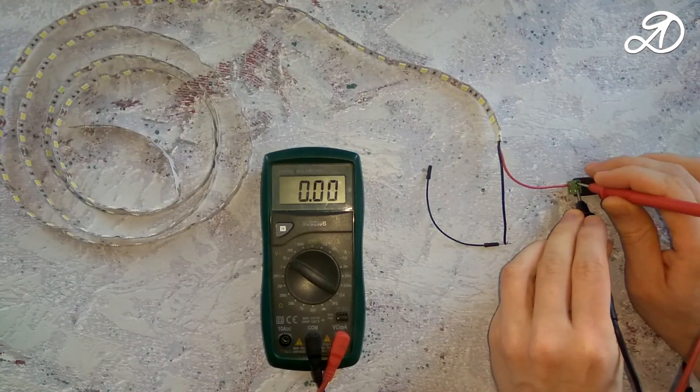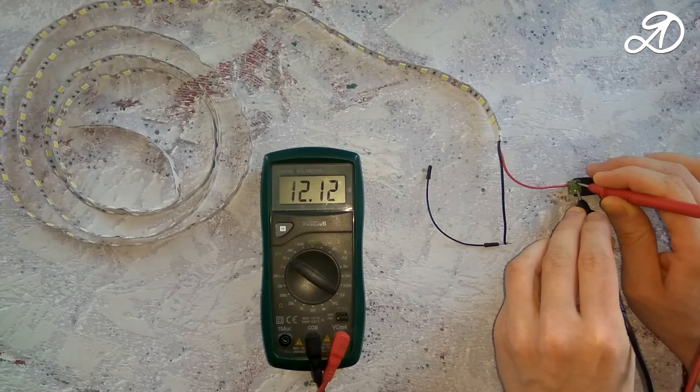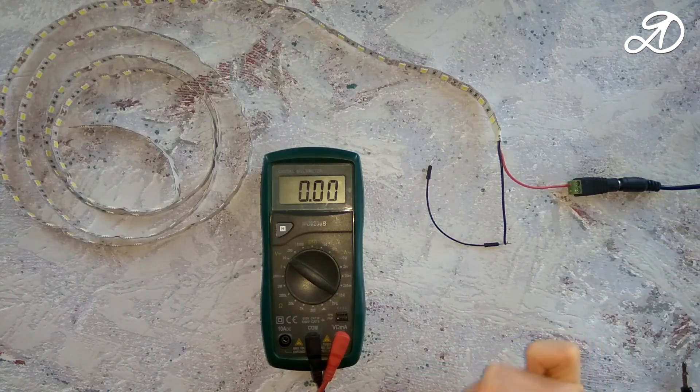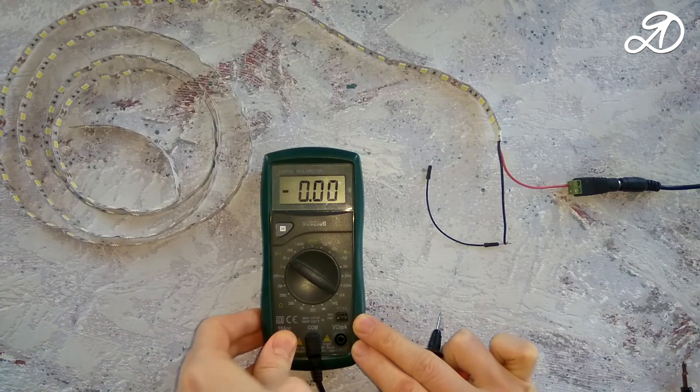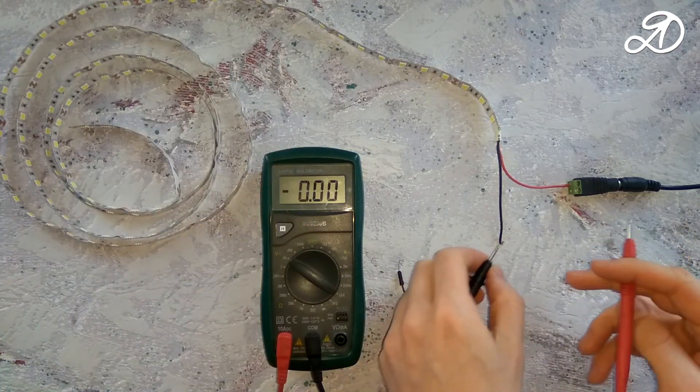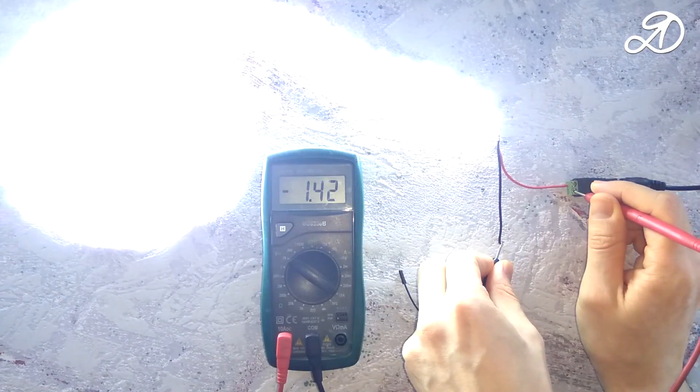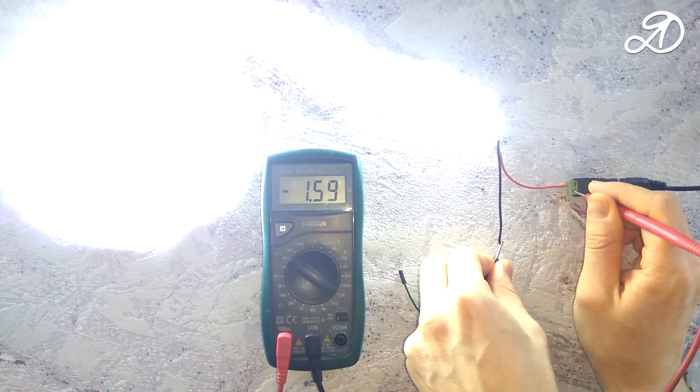The output voltage of the power supply. Now switch the multimeter to the current measurement amperage mode. You must move the red probe to another socket. Set it to 10 amps. LED strip type SMD 5050, 60 pieces per meter. 2 meters of LED strip consume 1.6 amps.